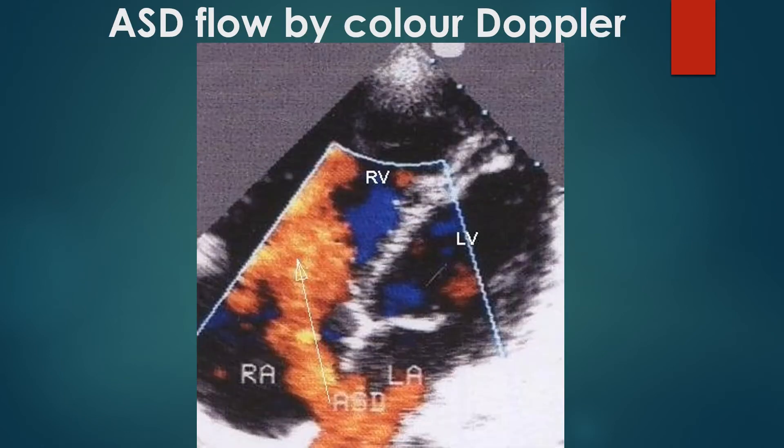Color Doppler flow mapping shows red-colored flow across the atrial septum from left atrium to right atrium. The flow is red because it is towards the echo transducer in this view. Blue-colored jet moving from right atrium to left atrium can occur when there is severe pulmonary hypertension. Transient right-to-left shunt can occur even without pulmonary hypertension during Valsalva maneuver.